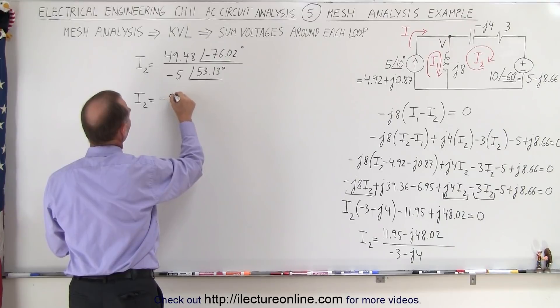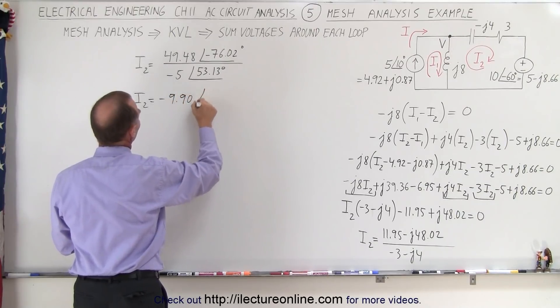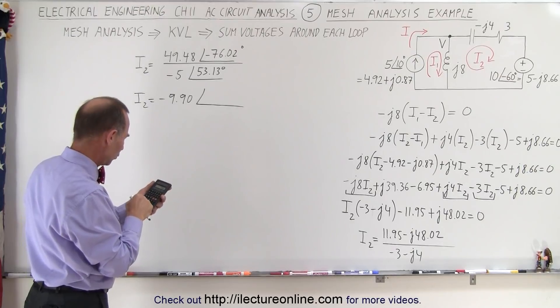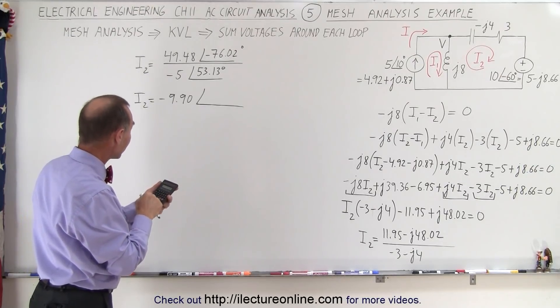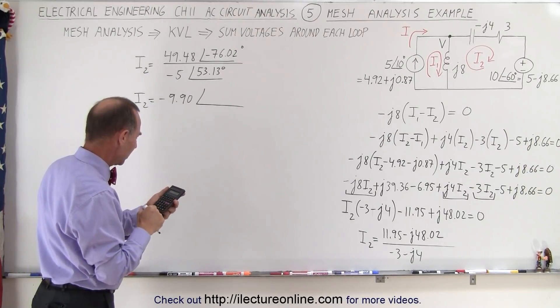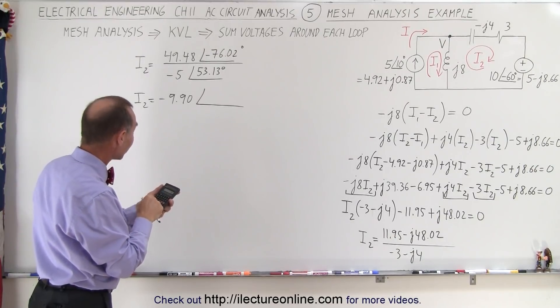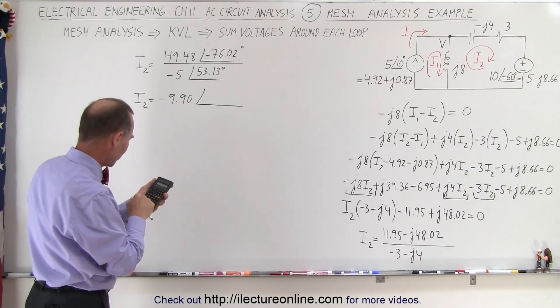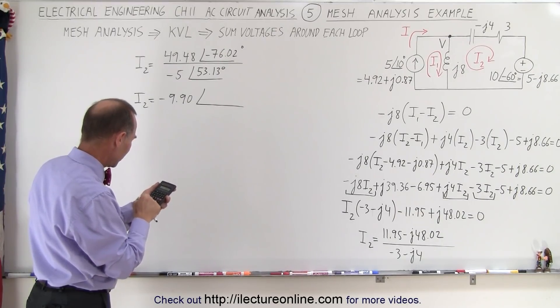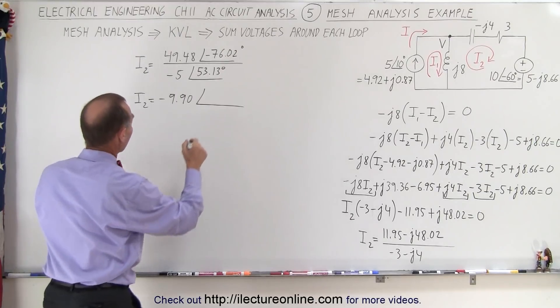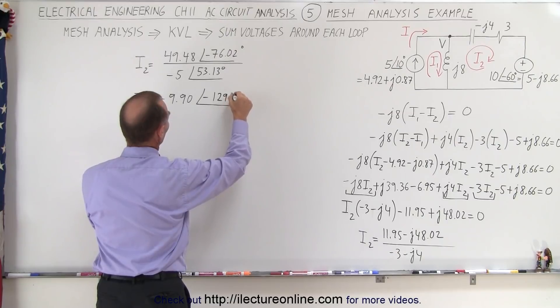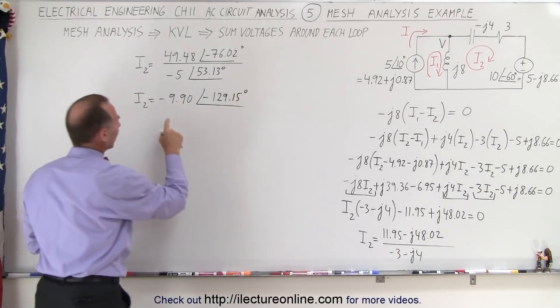So I2 becomes equal to 49.48 divided by a negative 5 that's a negative 9.90 with a phase angle of 76.02 minus 53.13, well let me try that again 76.02 that's a negative minus 53.13 that's minus 129.15 degrees.